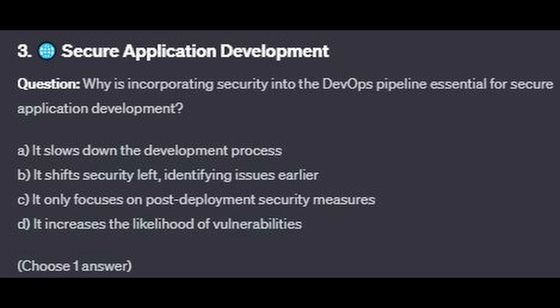For question number 3: why is incorporating security into the DevOps pipeline essential for secure application development? Is it A: it slows down the development process? Is it B: it shifts security left, identifying issues earlier? Is it C: it only focuses on post-deployment security measures? Or is it D: it increases the likelihood of vulnerabilities? Choose one answer.